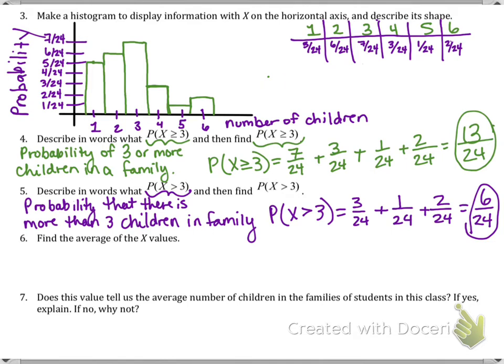Let's talk about the average of the X values. If I were to simply find the average of the X values, that would just be 1 plus 2 plus 3 plus 4 plus 5 plus 6 and divide it by those six, and I'd get 3.5. Does this value tell us the average number of children in the families of students in this class? When you look up here, would you say that the average is 3.5? Yes or no? Why or why not?